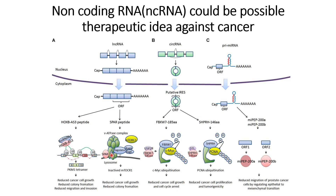Similarly, the SPAR peptide will prevent the ATPase activity in lysosomes by forming a vATPase complex that inactivates mTORC1, and thereby also results in reducing cancer cell growth and reducing cancer colony formation. By artificially introducing these long non-coding RNAs, it could be beneficial to reduce cancer cells within the patient.